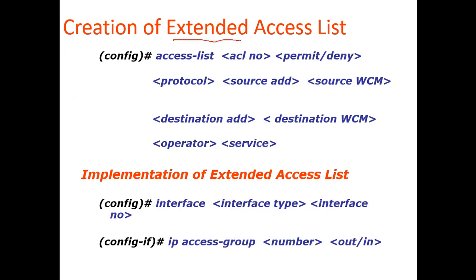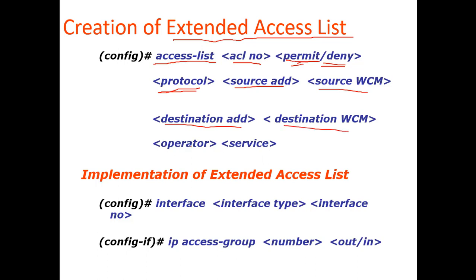Here is how you create an extended access list. First, specify which access list you want to configure, then provide the entry status — permit or deny. Then enter the protocol, followed by the source address, source wildcard mask, destination address, destination wildcard mask, and finally the operator and service.